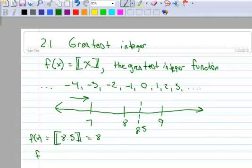So, here's another example, what's the greatest integer of 9? Well, 9 is an integer, and 9 is certainly the greatest number or greatest integer in 9, so that would be 9.